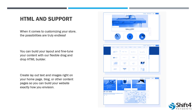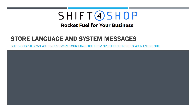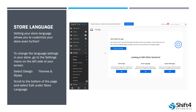We also have lots of resources and how-to sections on how to use this tool in our knowledge base. If you'd like some further detail, that's a great resource to check out as well. Now that we've talked about customizing the look of our store, let's talk about customizing a different feature — you can also customize your store language and your system messages. Shift4Shop allows you to customize your store from specific buttons to your entire website. The first thing we're going to look at is changing our store language.